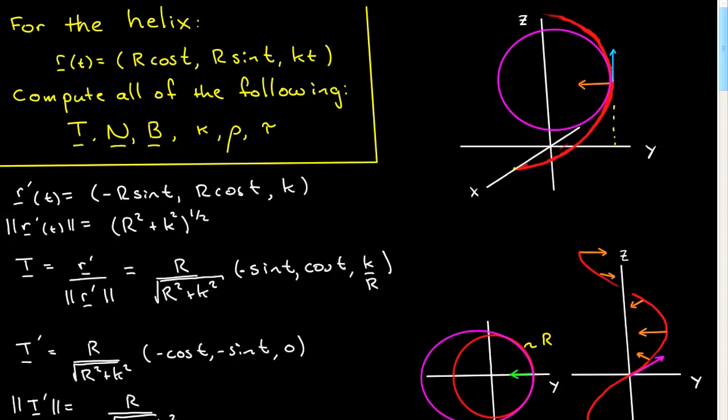This screencast is a continuation of the examination of the helix in which I gave you a parameterization, and we're in the process of computing the Frenet basis vectors, the curvature, radius of curvature, and torsion. I had gotten through computing the first two basis vectors and the curvature and radius of curvature.